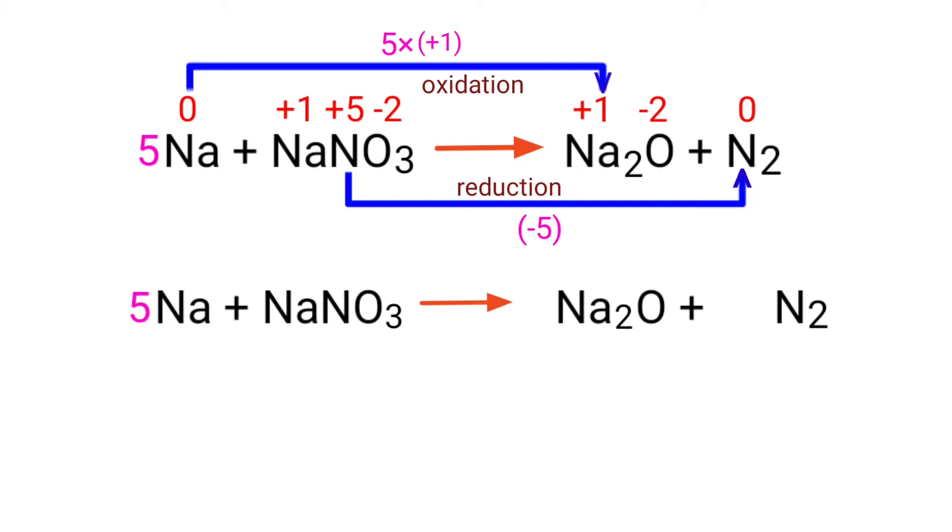Now you can balance the number of atoms in this equation. In the reactants side there are 6 sodium atoms, 1 nitrogen atom, and 3 oxygen atoms. And in the products side there are 2 sodium atoms, 2 nitrogen atoms, and 1 oxygen atom. The number of atoms are not balanced on both sides. To balance the chemical equation, we need to make use of coefficients. A coefficient is a number that we place in front of a chemical formula.